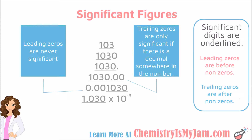Here we have some numbers that we're going to go through and determine which digits are significant, using the rules we just went over. We're mostly going to be focusing on the zeros because all non-zeros are significant. As a reminder, leading zeros come before non-zeros and trailing zeros come after non-zeros. In this first example, the 1 and the 3 are non-zeros so they are significant. This zero is between two non-zeros, which makes it also significant.